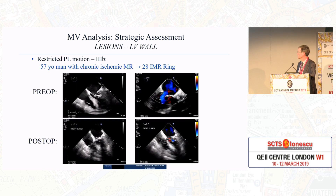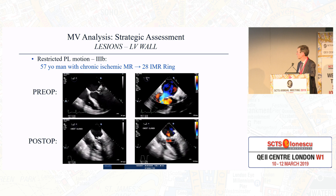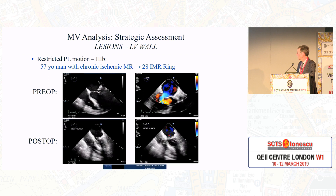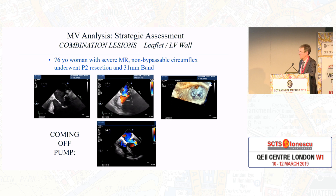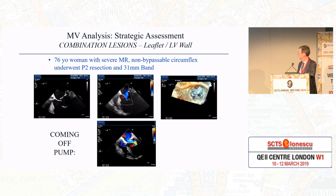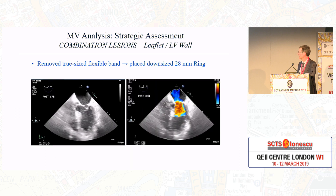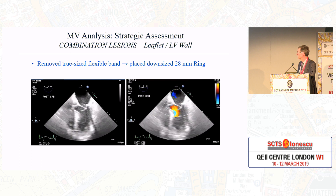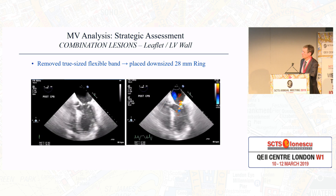Combination lesions: you can have more than one portion of the mitral valve apparatus involved. Here is a 76-year-old woman with involvement of both the leaflets and the left ventricular wall. She had P2 resection and a 31-millimeter band for what looked like standard prolapse. Coming off pump, she still had severe mitral regurgitation. Looking closer, we saw she also had posterior wall dysfunction not appreciated on the initial echocardiogram. We removed her true-sized flexible band and placed a downsized ring, eliminating the regurgitation. That case demonstrated the importance of reassessment and reevaluating your own work.